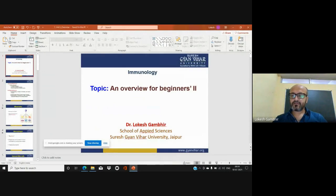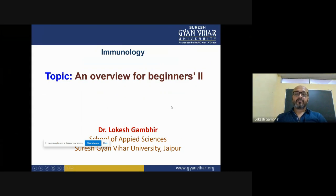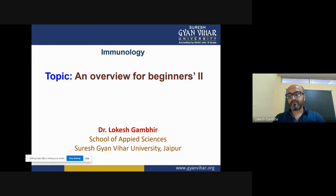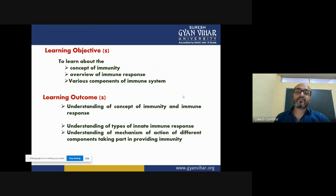Good morning everyone, welcome to another lecture in the series of immunology. Today we'll be continuing from the last lecture, taking ahead the topic of the overview of beginners. We'll be talking about the remaining portion of your immune system, focusing on different cell types like monocytes, phagocytes, and natural killer cells, and also covering the inflammation part.